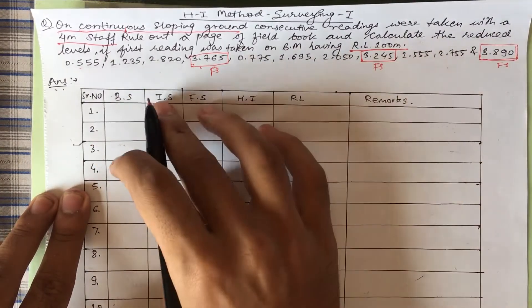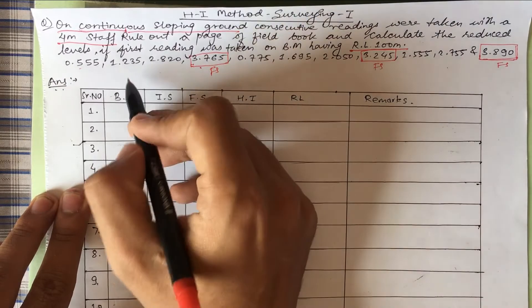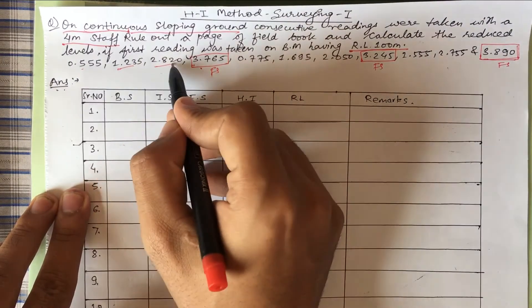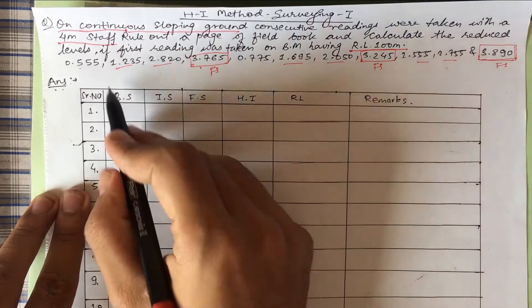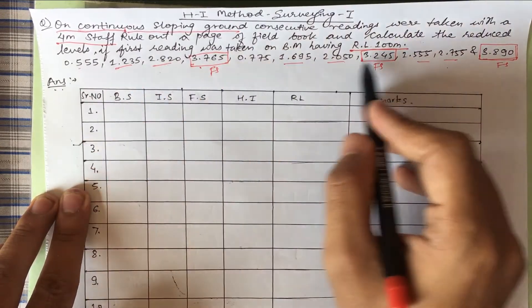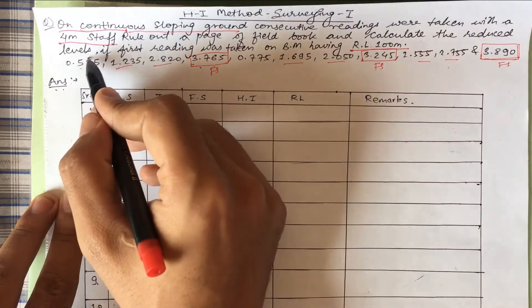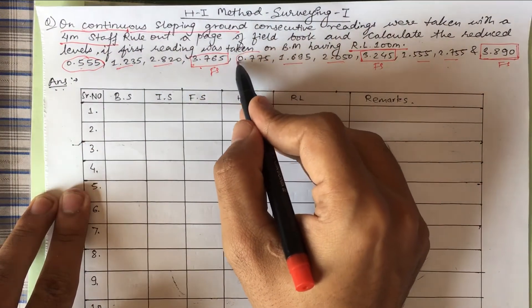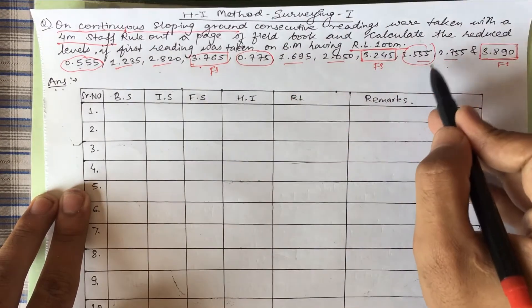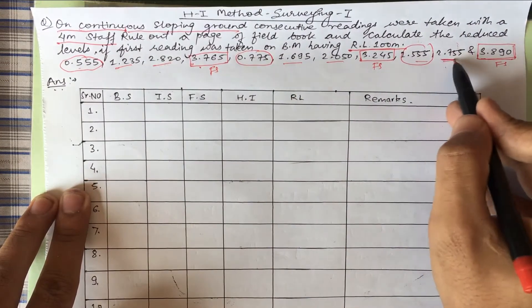Our intermediate sights will be these points. BS will be this point. Just after foresight, that will be BS. Intermediate sight will be this.